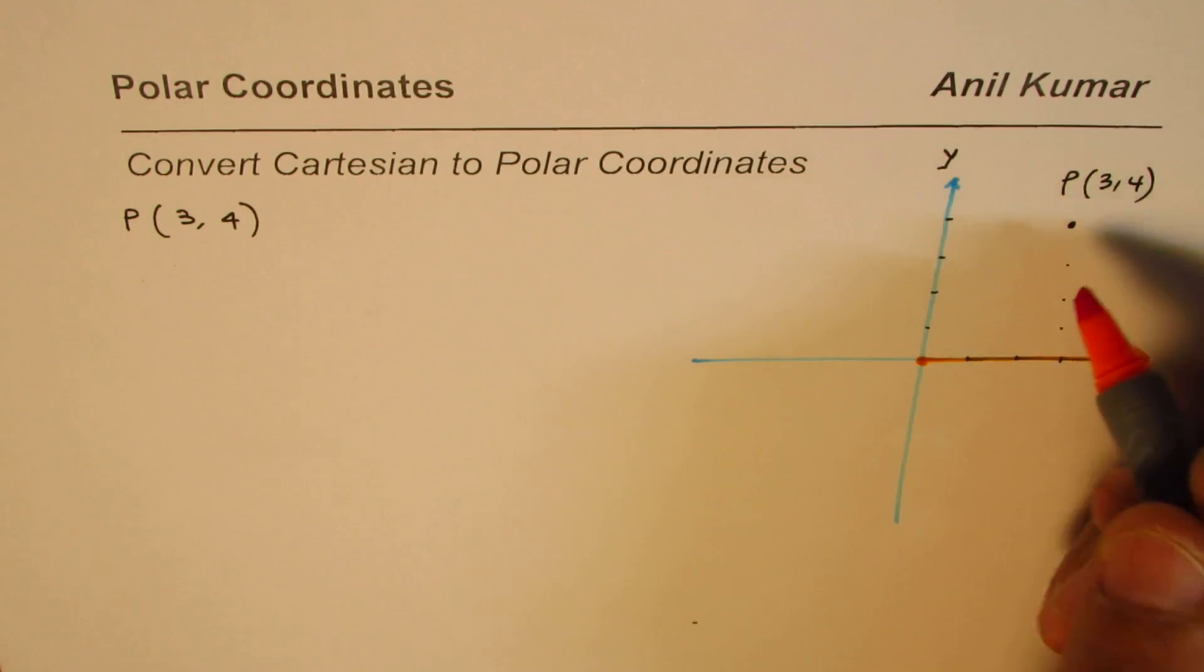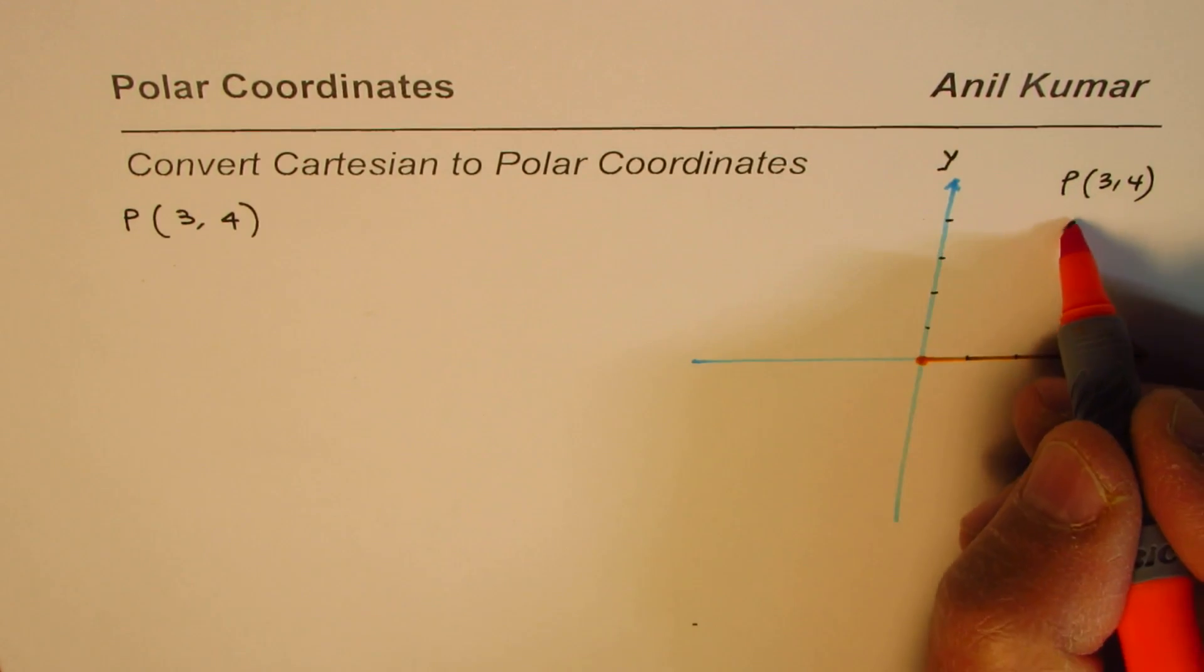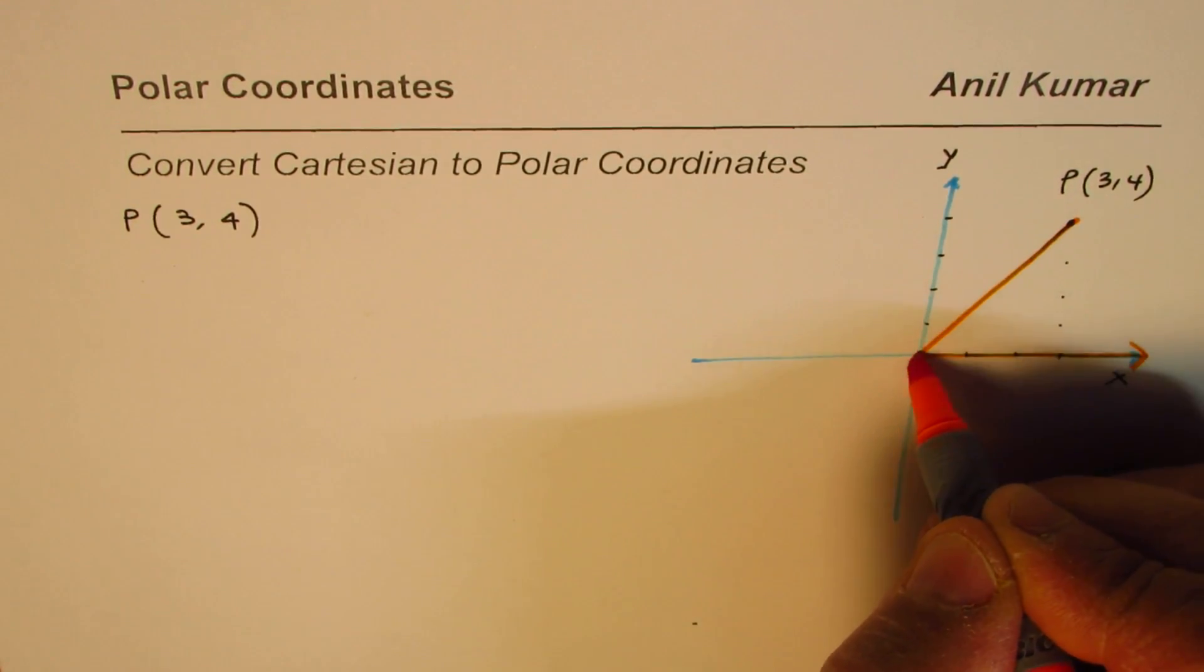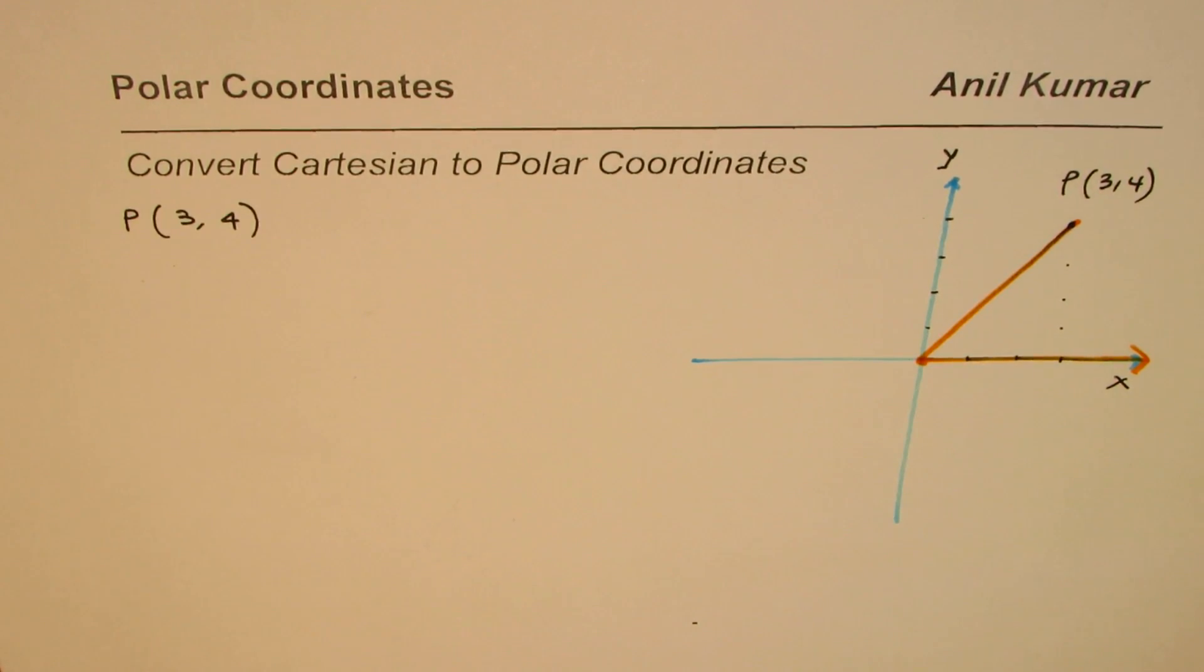And to represent the point, we'll just connect this point with the pole like this. And we say, well, that is the polar coordinate. So simple.